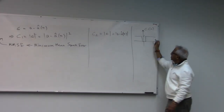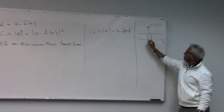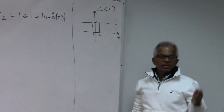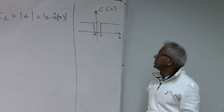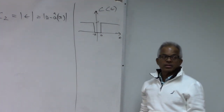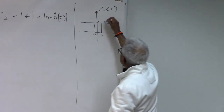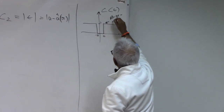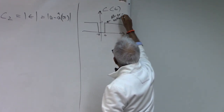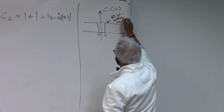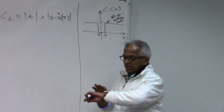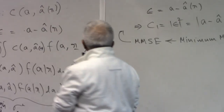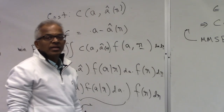There are three cost functions in terms of the error. The third one is an all-or-nothing cost: if the error is small, there is no cost; if the error is beyond a delta, the penalty is high. Let's quickly see what the estimators turn out to be in these three cases.